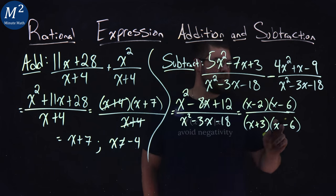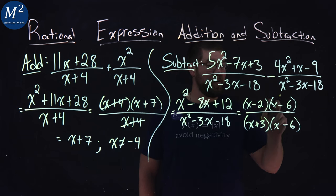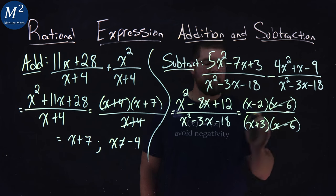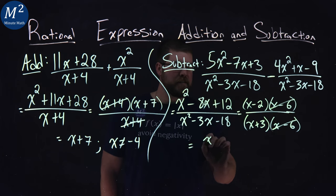And lo and behold, look here. x minus 6. We can cancel numerator and denominator. Cancel that out. And we can rewrite here. We have x minus 2 over x plus 3.